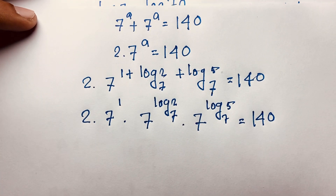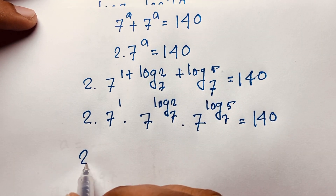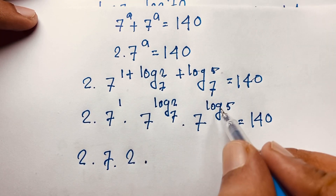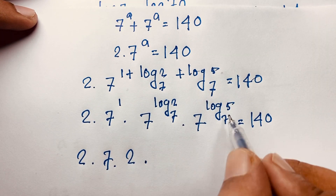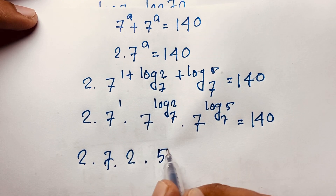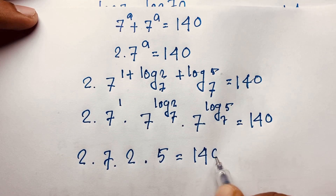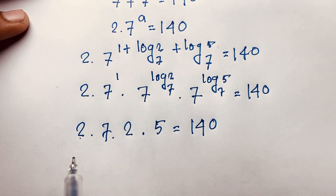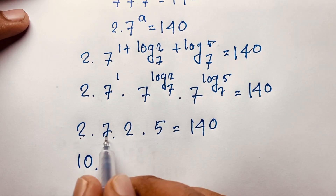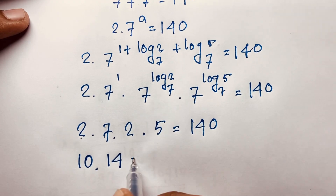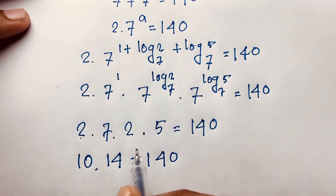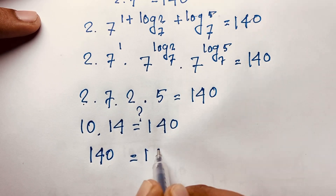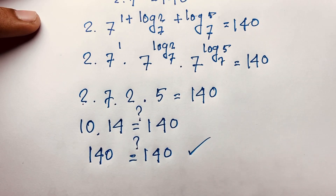You can see easily: 2 times 7, times 7 to the power log₇2 equals 2, times 7 to the power log₇5 equals 5, so it is 2 times 7 times 2 times 5 is equal to 140. That gives 2 times 5 equals 10, and 7 times 2 equals 14, so 10 times 14 equals 140, is equal to 140. Left hand side and right hand side are equal.